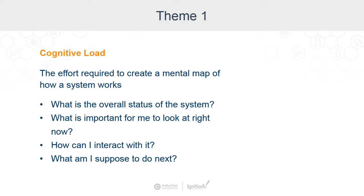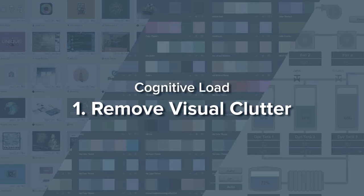What is important for me to look at right now? How can I interact with the system? What am I supposed to do next? One way to reduce cognitive load is to remove visual clutter. Every visual element on the interface adds to the overall cognitive load, so try to remove any extraneous information that doesn't actually help the user understand the data being presented.